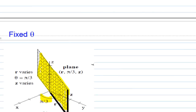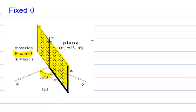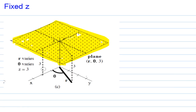If you fix the value of R — let's say R equals 2 — you get a cylinder surface, and every point on the cylinder surface of radius 2 with axis on the Z axis will have R equal to 2. If you fix the value of theta — let's say theta equals pi over 3 — you get a half-plane inclined at an angle pi over 3 from the X-axis. If you fix the value of Z — say Z equals 3 — you get a horizontal plane where any point on it has Z coordinate equal to 3.